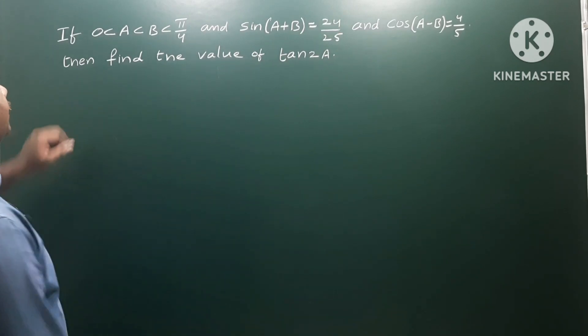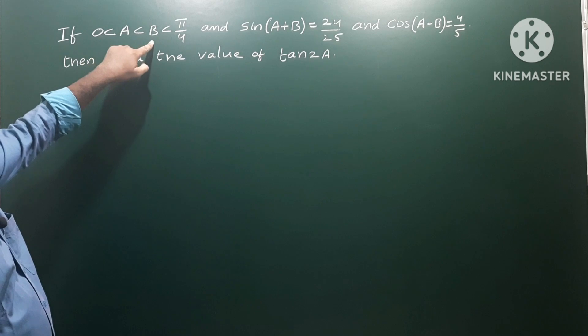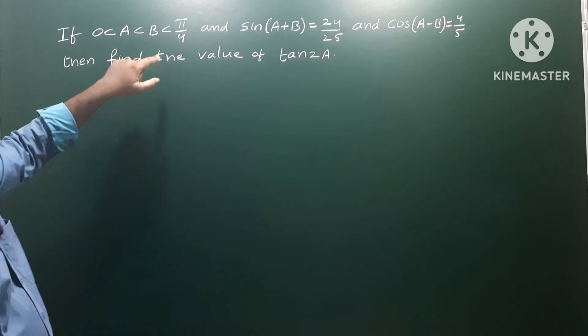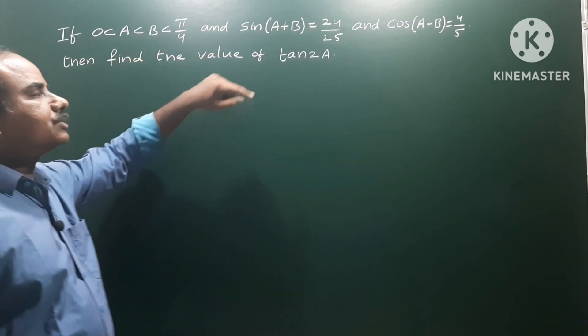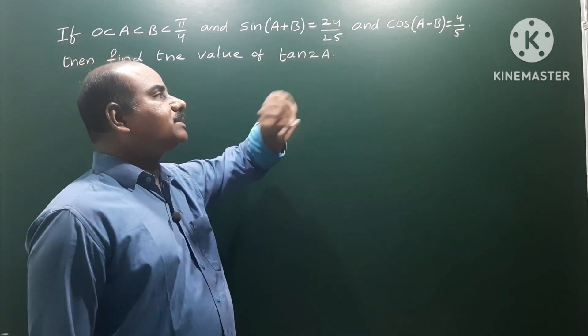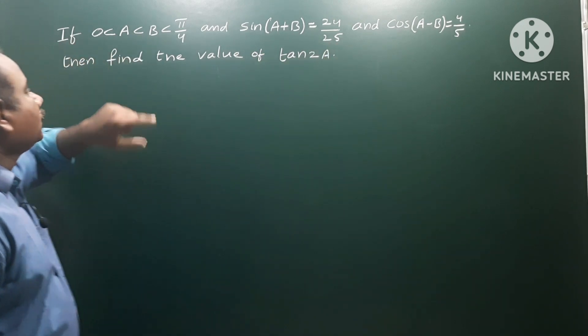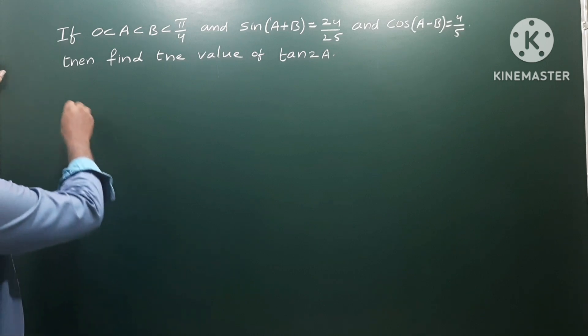Next problem: If 0 < A < B < π/4 and sin(A+B) = 24/25, cos(A-B) = 4/5, then find the value of tan 2A. The given information is 0 less than A less than B less than π/4.